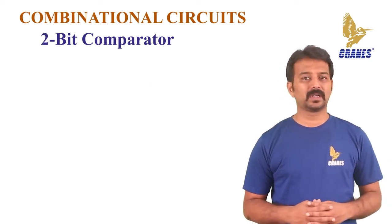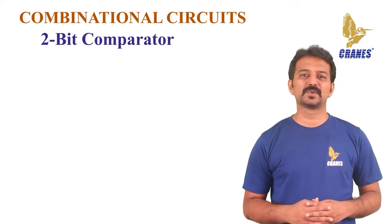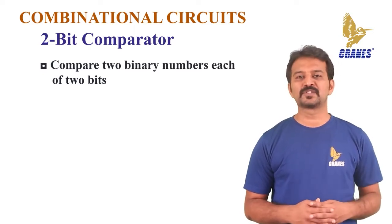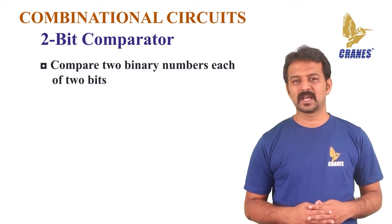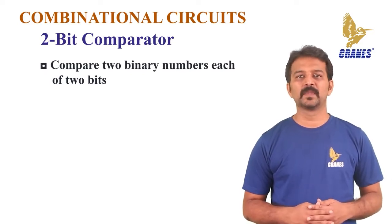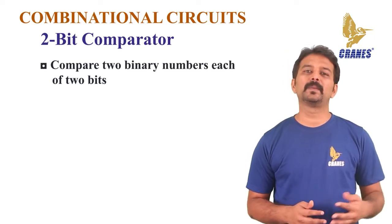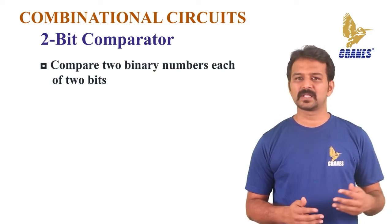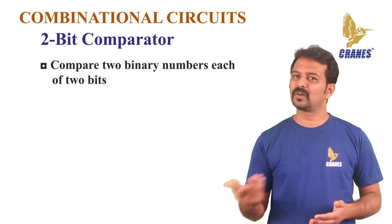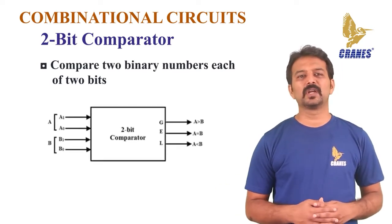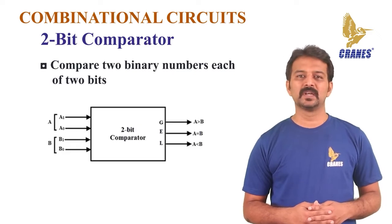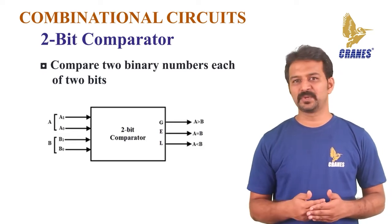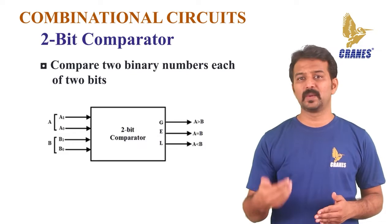Let's look at a two-bit magnitude comparator. A comparator which is used to compare two binary numbers, each of two bits, is called a two-bit magnitude comparator. It consists of four inputs and three outputs to generate less than, equal to, and greater than between the two binary numbers. A two-bit comparator compares two binary numbers, each of two bits, and produces their relation such as one number being equal to, greater than, or less than. The figure shows the block diagram of a two-bit comparator which has four inputs and three outputs. The first number is designated as A, which is equal to A1 A0, and the second number is designated as B, which is equal to B1 B0.